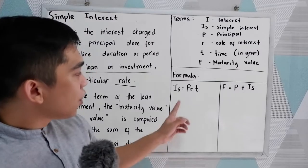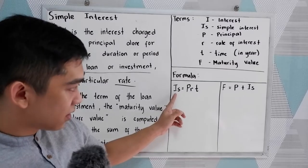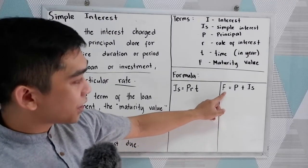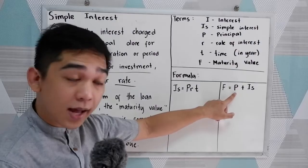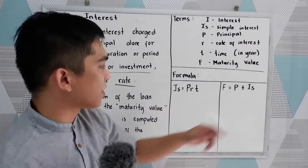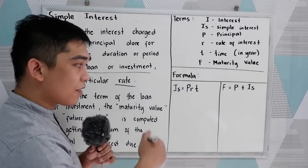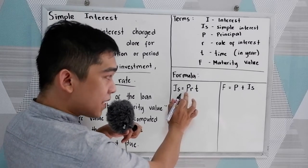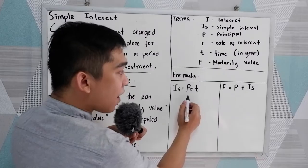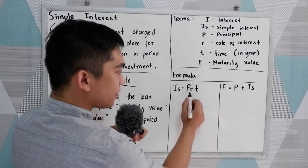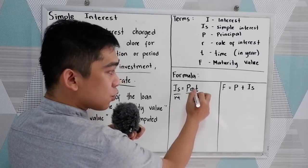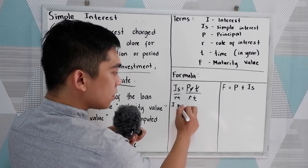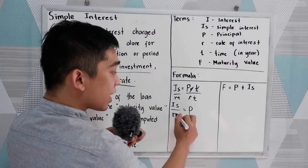For our formula, we have simple interest IS = P × r × t. And for the maturity value, F is equal to the principal plus the simple interest. From our formula, we can derive different formulas. If we're going to find P or the principal, we divide both sides by r × t, so P is equal to simple interest over rate times time.